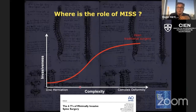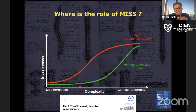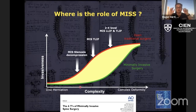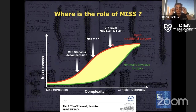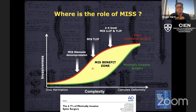What MIS surgery does for us is it dampens the curve, especially in the mid-zone of spinal surgery. The mid-zone I would define as pathologies ranging from lumbar spinal stenosis one, two, three levels, to pathologies requiring one to four level fusion. The workhorse procedures in MIS surgery are endoscopic tubular decompression for stenosis, MIS TLIF for one-level fusion, and a variation or combination of lateral approaches — LLIF, XLIF, OLIF — plus or minus TLIF. That's where minimally invasive spinal surgery really provides the greatest benefit.